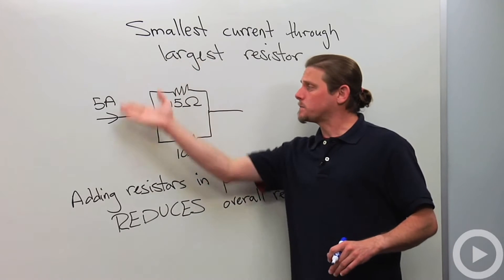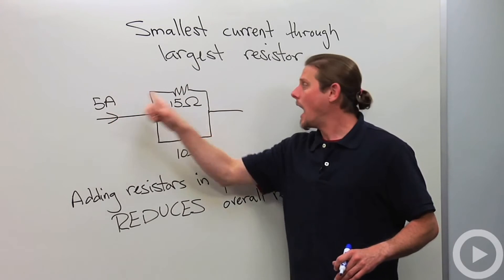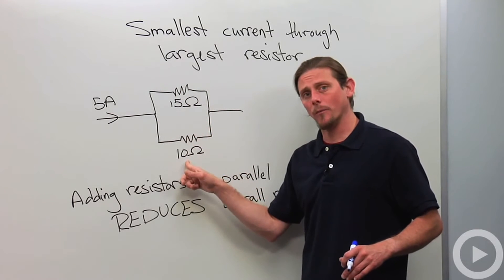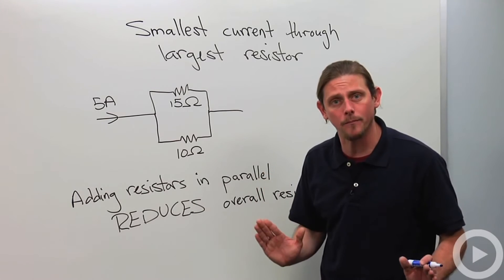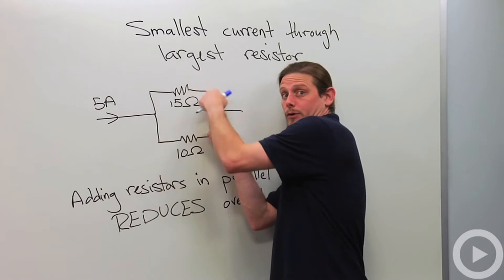Now, the way that this parallel network is going to work, I've got five amps coming in, and I've got two resistors. The 15 ohm and the 10 ohm. The potential difference is the same. So you can kind of think of these as point A, point B, two different roads.